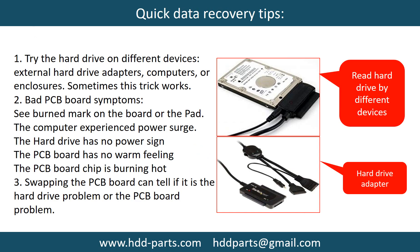There are some simple ways to recover data from a hard drive. One of them is to try to read the hard drive by different devices, like different external hard drive adapters, computers, or enclosures. Because different devices use different ways to read a hard drive, sometimes this trick works. Another way is swapping the hard drive PCB board. Swapping the hard drive PCB board can fix the problem caused by the PCB board. There is a cost in swapping the PCB board, but it is way cheaper than sending the hard drive to a data recovery firm.